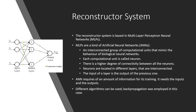The connections between different layers are regulated by weights. Artificial neural networks require a training process before use, during which they receive information of the input and the correct output, and modify the weights between layers to learn to give an answer to the problem. They are characterized by learning from data. Different optimization algorithms can be used in this process. In this work, the backpropagation algorithm was used.